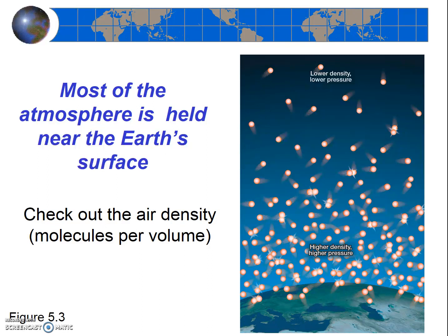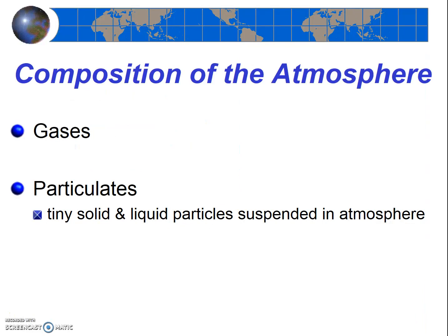Elite athletes like to train at high altitudes, as their bodies get used to the low oxygen levels, and when they return to sea level, the extra oxygen helps boost their performance. So why are all the gases held close to the Earth? Gravity — the Earth's gravitational pull — holds air near the Earth, just as it holds you on the Earth. The Earth's atmosphere is composed primarily of gases, but there are solids and liquids present in the air as well. The solid and liquid droplets are called particulates, and we'll discuss them later.